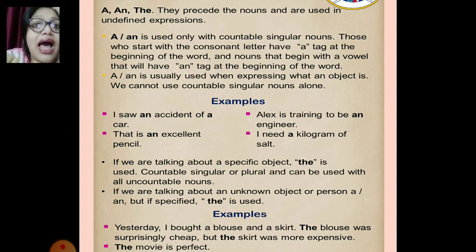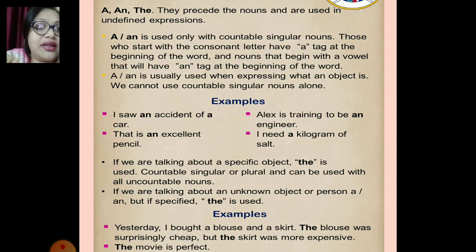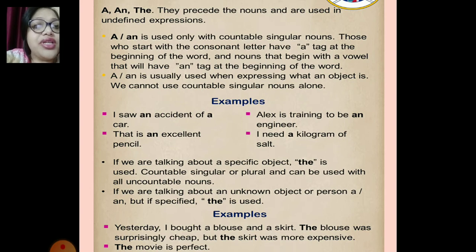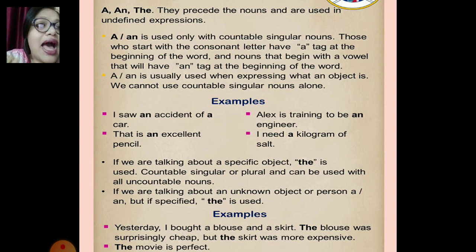'A' and 'an' is usually used when the expression identifies what an object is. For example: I saw an accident of a car. That is an excellent pencil. Alex is training to be an engineer — before 'engineer' we use 'an'. I need a kilogram of salt.